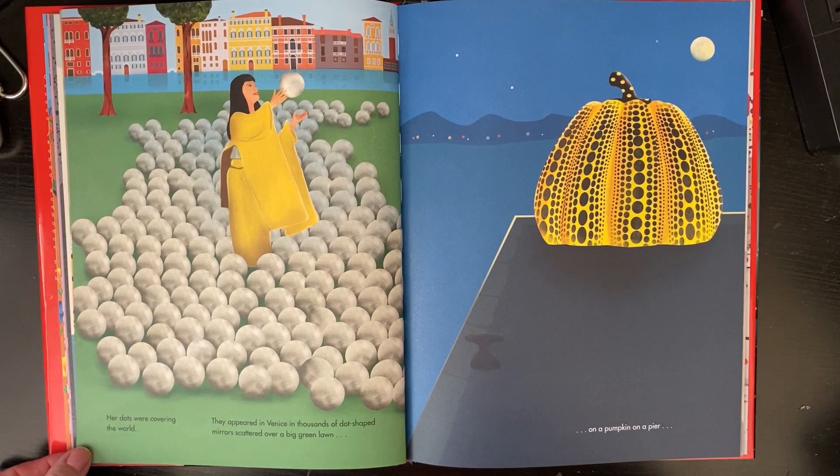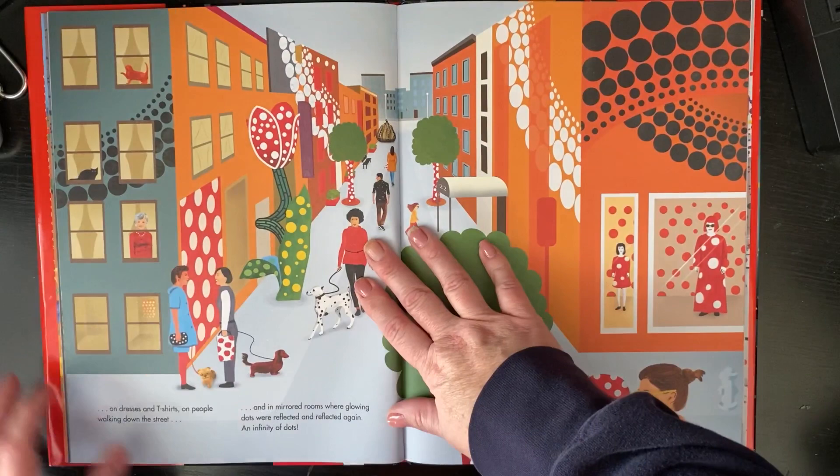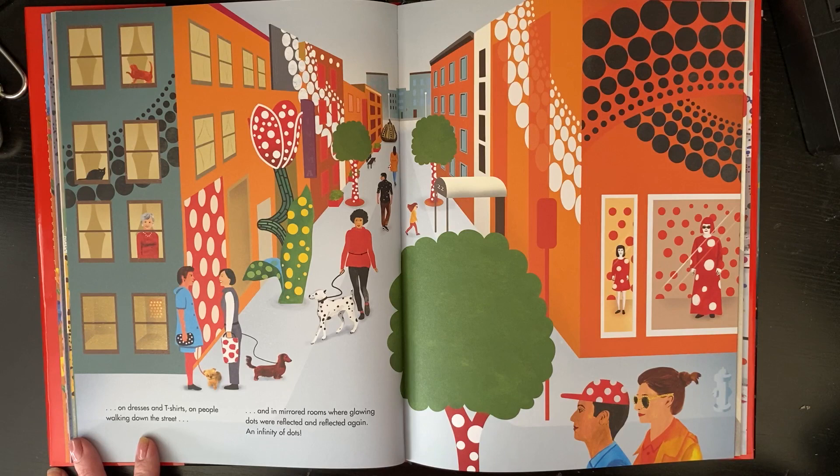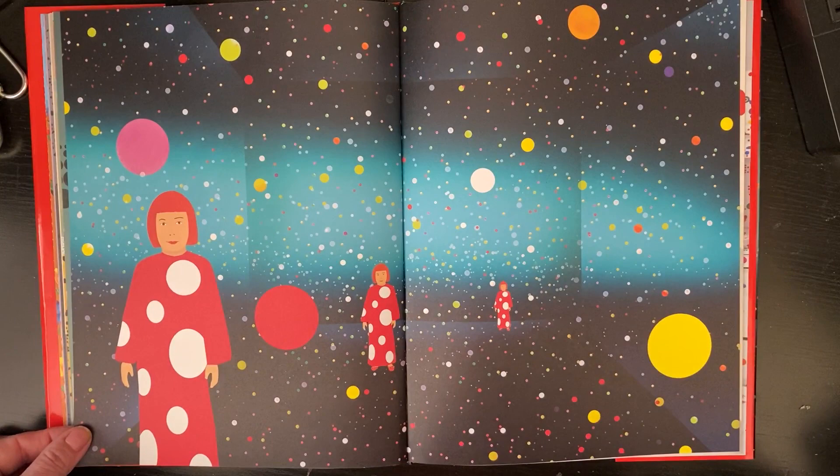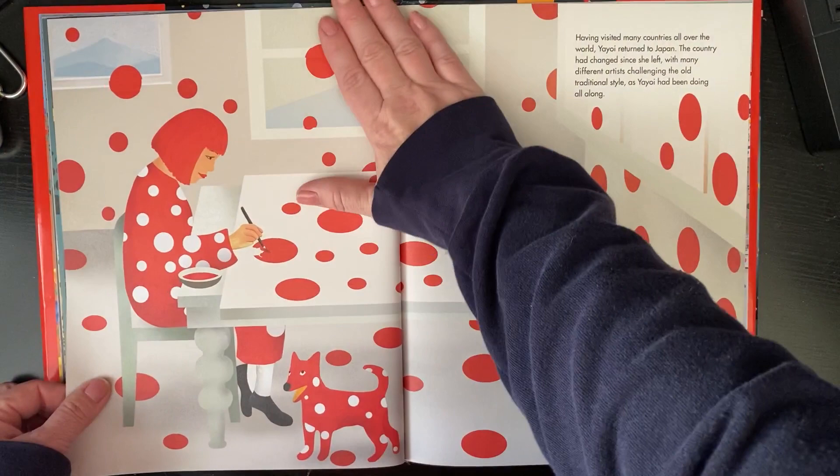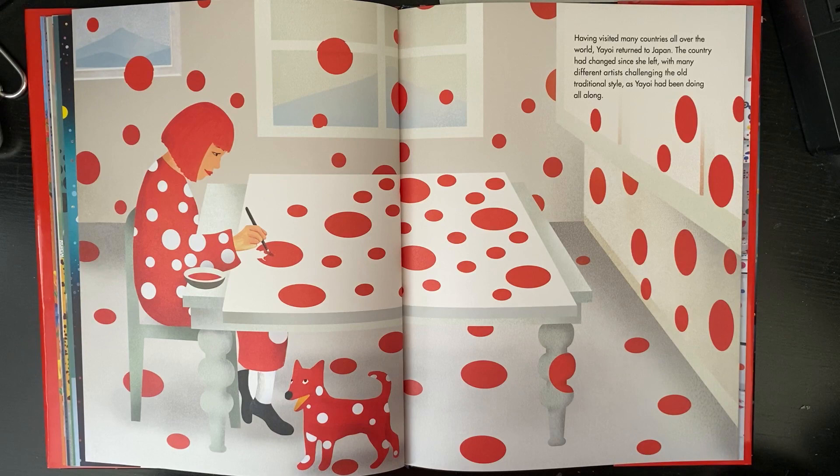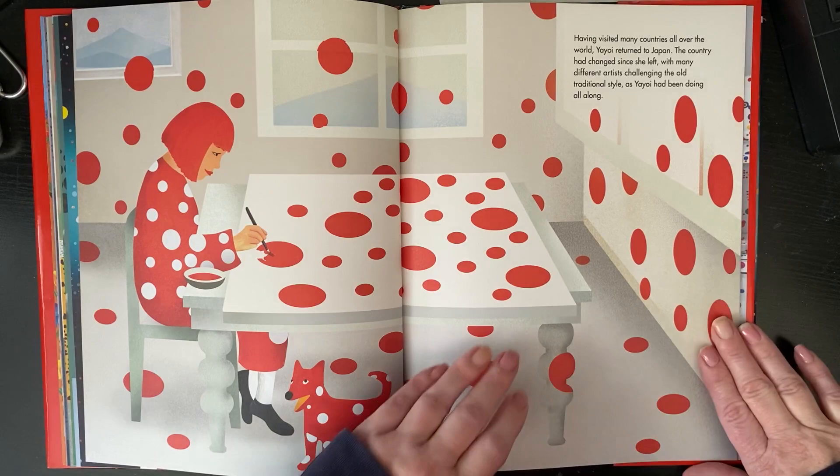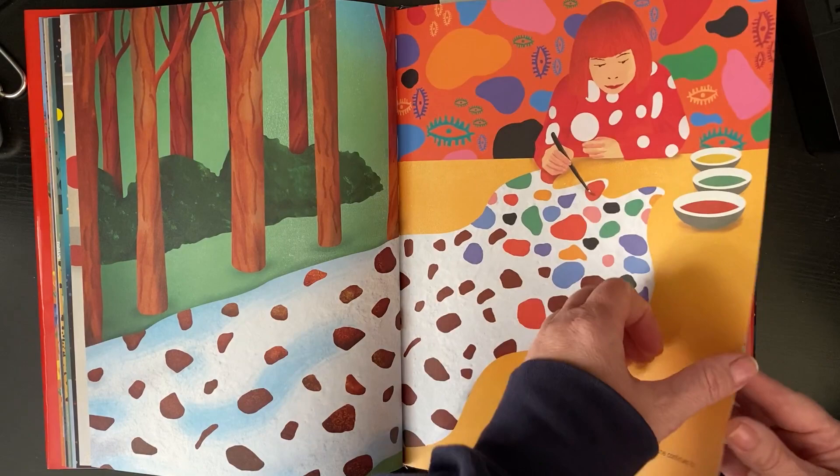Her dots were covering the world. They appeared in Venice in thousands of dot-shaped mirrors scattered over a big green lawn, on a pumpkin on a pier, on dresses and t-shirts, on people walking down the street, and in mirrored rooms where glowing dots were reflected and reflected again, an infinity of dots. Having visited many countries all over the world, Yayoi returned to Japan. The country had changed since she left, with many different artists challenging the old traditional style, as Yayoi had been doing all along.